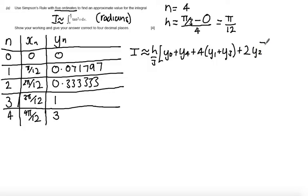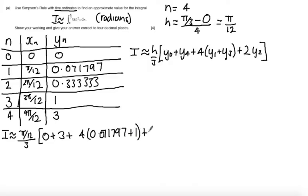plus 2 times the remaining even ordinates. The only remaining even ordinate is y₂. So my integral I is going to be evaluated as π/12 over 3 multiplied by 0 plus 3 plus 4 lots of 0.071797 plus 1 plus 2 lots of 0.333333. Once you've shown the substitution of the values there's no need to do any intermediary steps. You can just use your calculator to evaluate this. Remembering that we're going to evaluate this to 4 decimal places, you should get an answer of 0.6941.